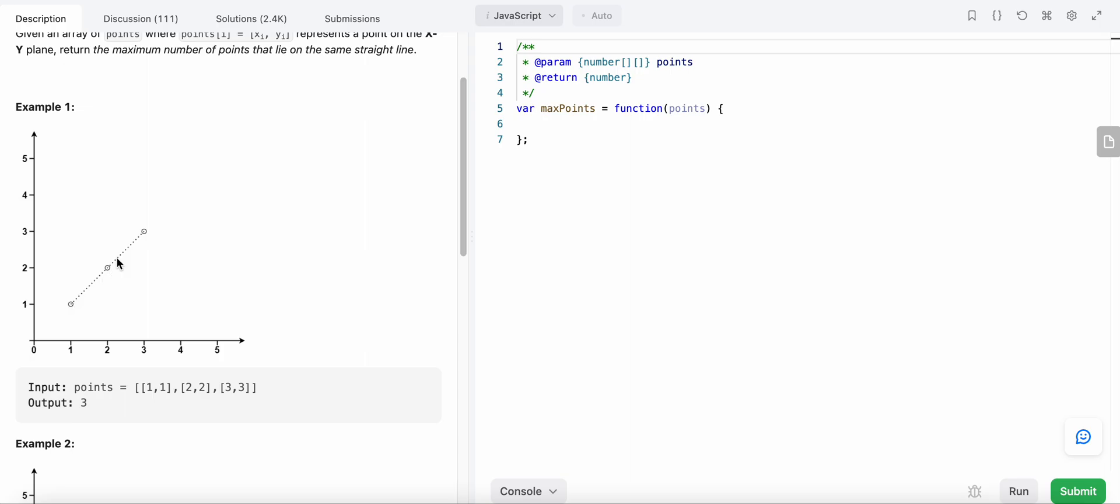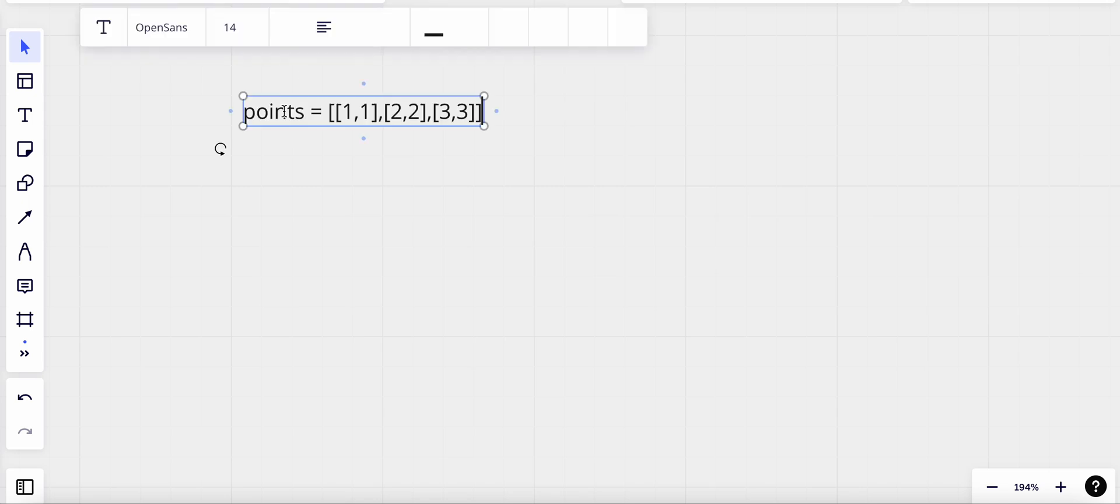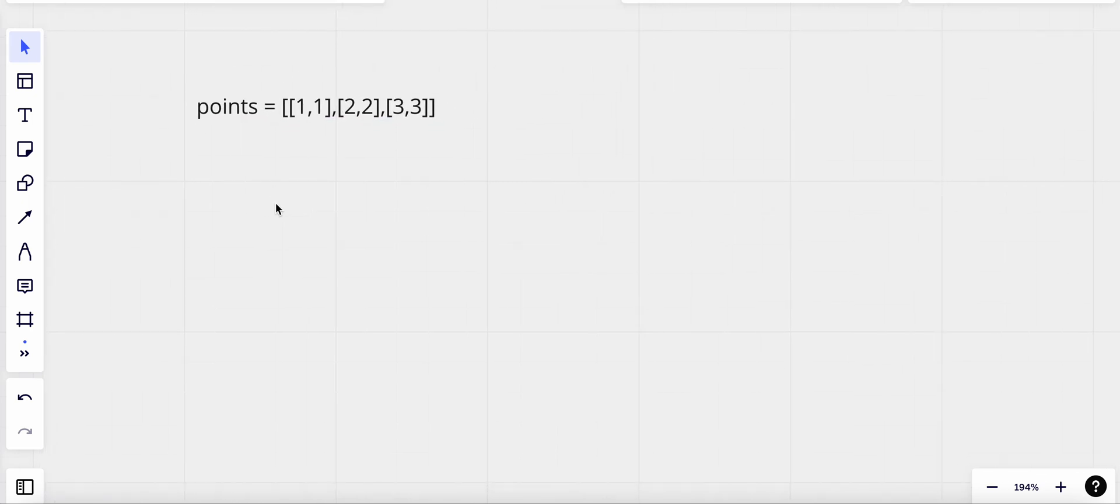how do we know if all these three points lie on the same straight line? Let's transfer this problem here. Now this becomes a problem of finding a slope, because we know that